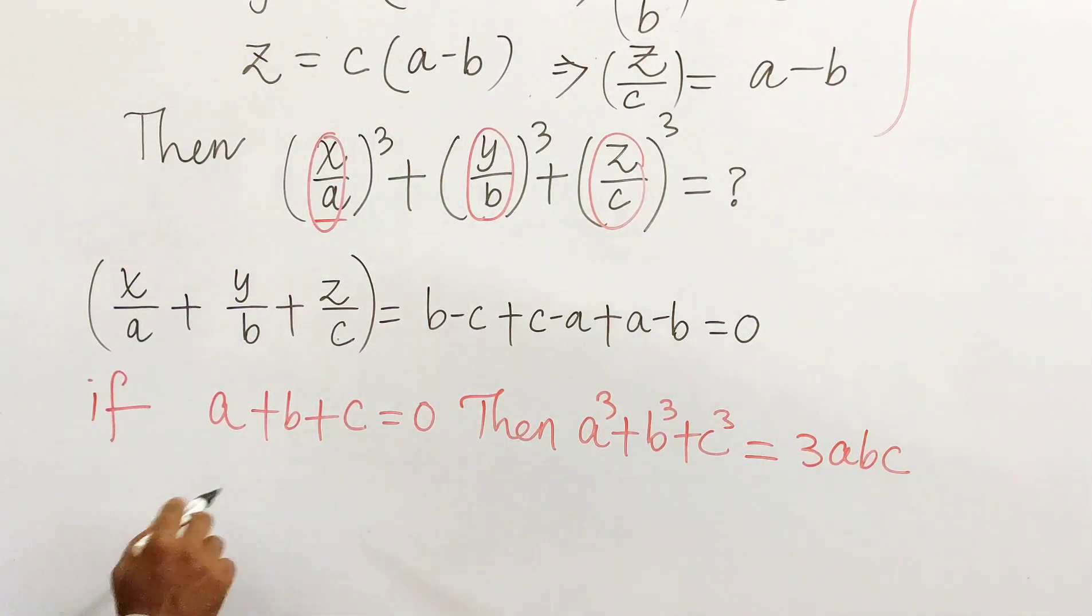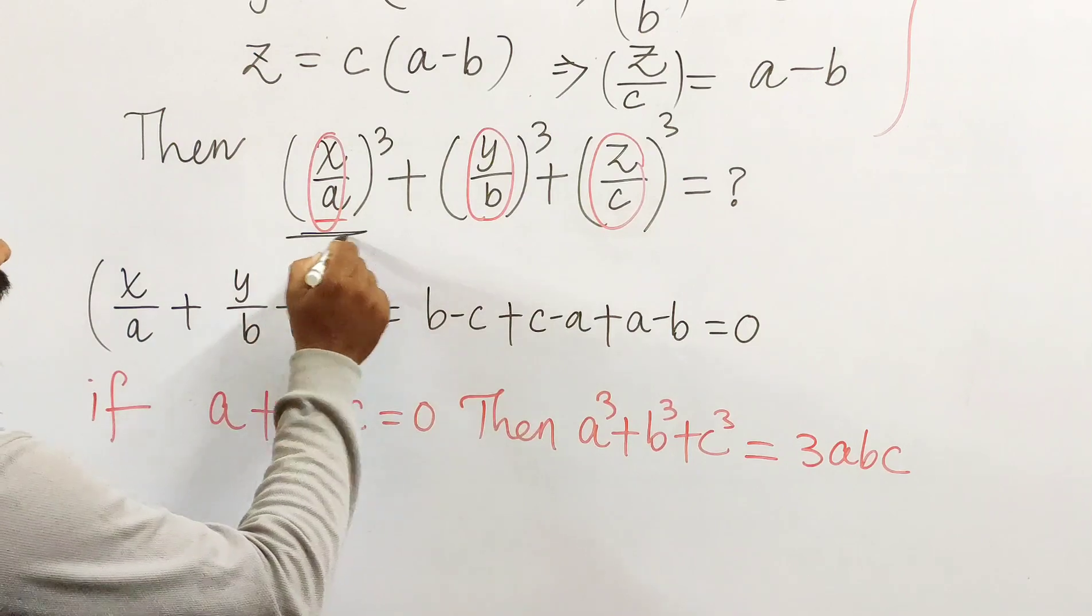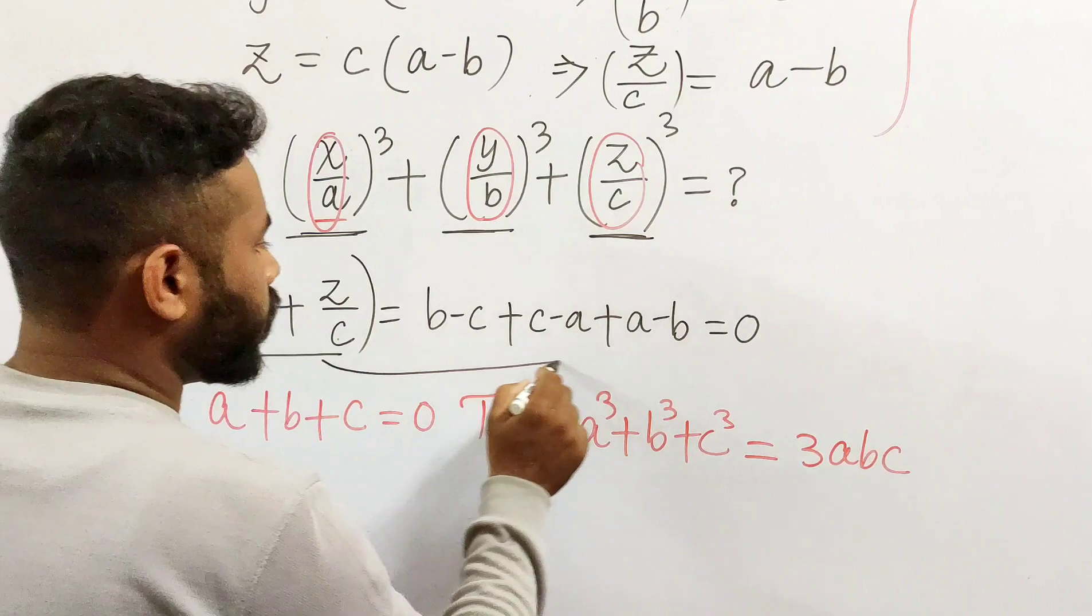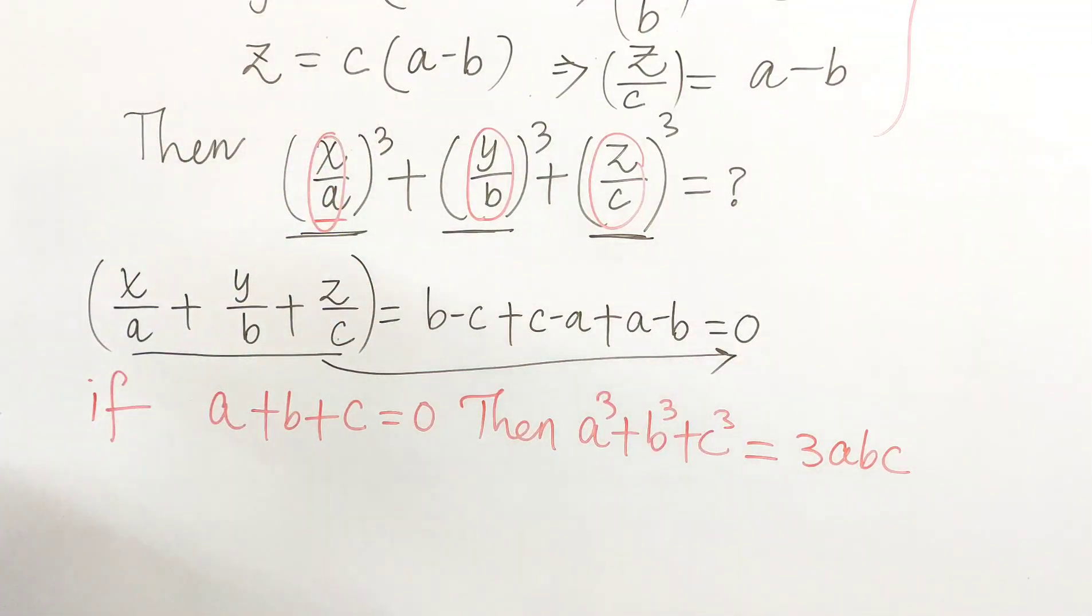If you assume this is to be a, b, and c, then their sum is actually equals to zero. Therefore, we can say that this must be equals to 3 times x by a, y by b, and z by c.